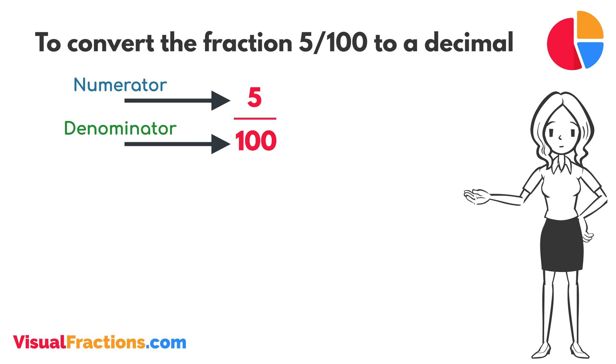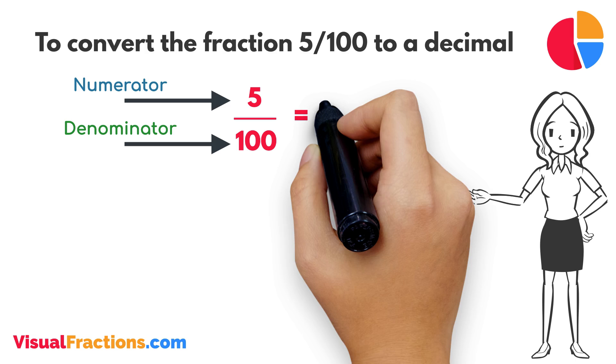So, we simply divide 5 by 100. The answer we get is 0.05.